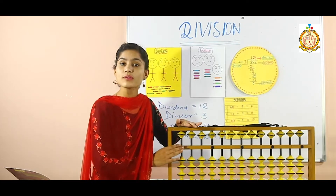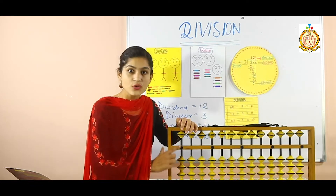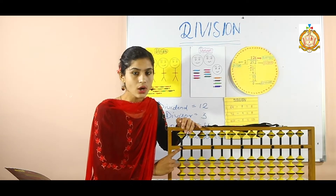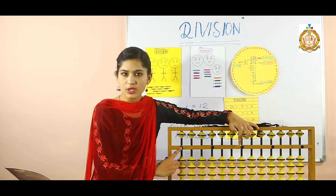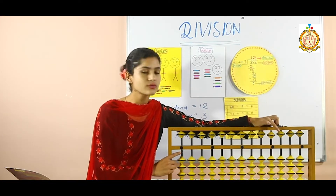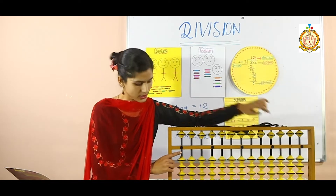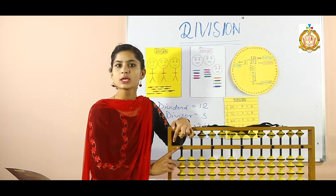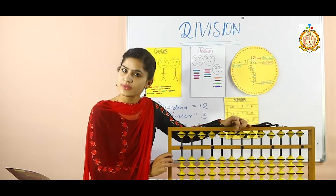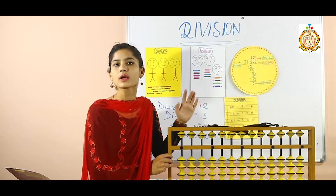First, we will keep our divisor on the first dot. On the middle one, we will keep our dividend. And on the last one, we will keep our quotient. So: first contains divisor, second contains dividend, and last contains the answer — the quotient.